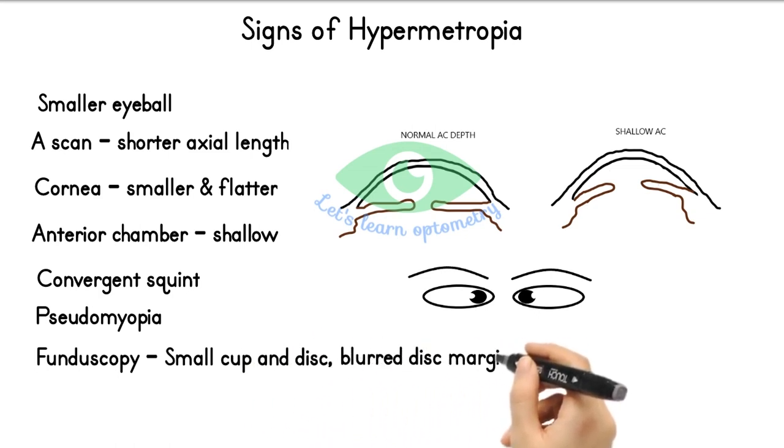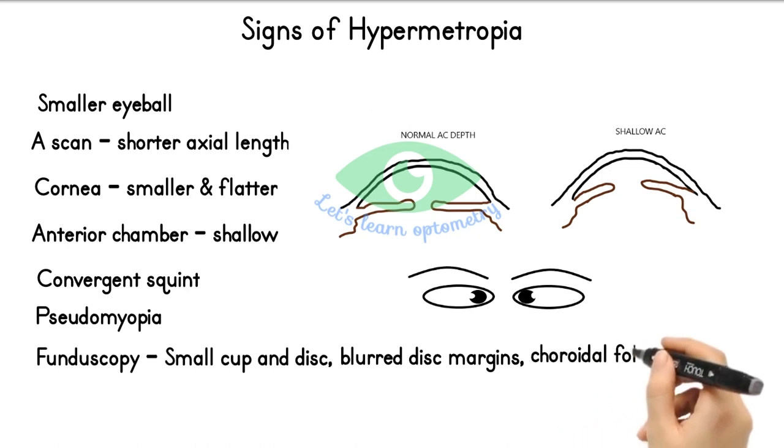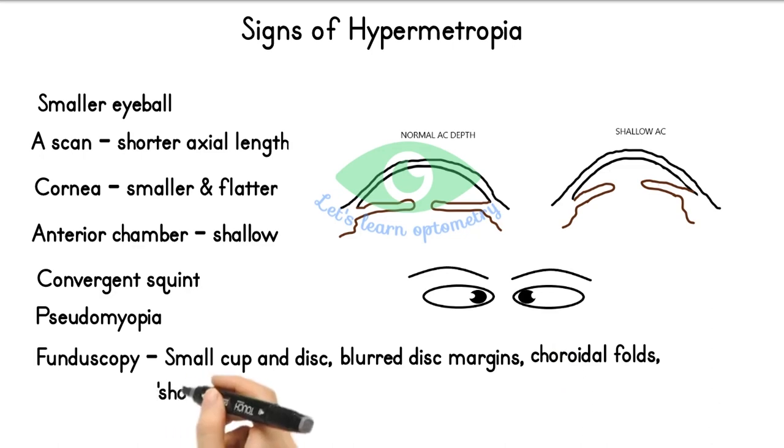Disc margin becomes blurred with overcrowding of blood vessels, sometimes termed pseudopapillitis or pseudopapilledema. Choroidal folds may be present. Increased reflex of retina named shot silk appearance is seen along with crowding of nerve fiber layer.